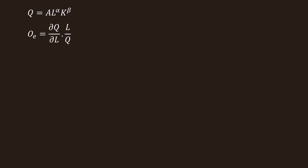To find dQ/dL, partially differentiate the given production function with respect to labor. Except L, all other terms are treated as constant. Therefore, dQ/dL equal to A alpha L^(alpha minus 1) K^beta. Here, L^(alpha minus 1) can be stated as two terms. Simplifying: dQ/dL equal to A alpha L^alpha L^(minus 1) K^beta.